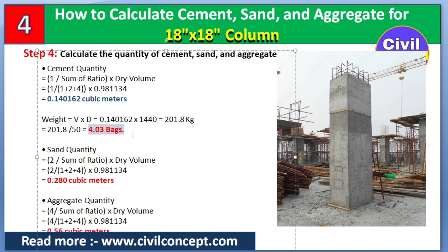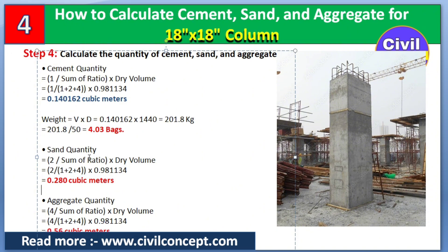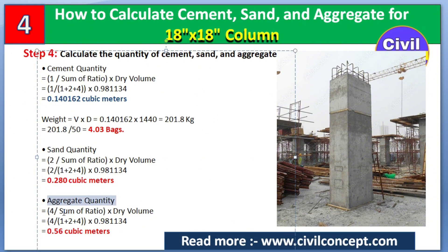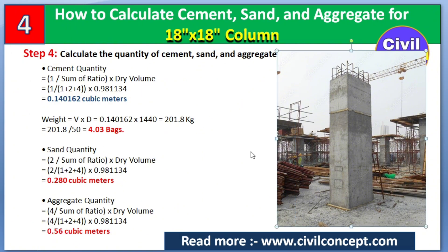Similarly, for sand: (part of sand / sum of ratio) × dry volume = (2 / 7) × 0.981134 = 0.280 cubic meters. For aggregate: (part of aggregate / sum of ratio) × dry volume = (4 / 7) × 0.981134 = 0.561 cubic meters. So we have 0.561 cubic meters of aggregate, 0.280 cubic meters of sand, and 4.03 bags of cement. In this way we can calculate cement, sand, and aggregate for different dimensions of columns, beams, and slabs.